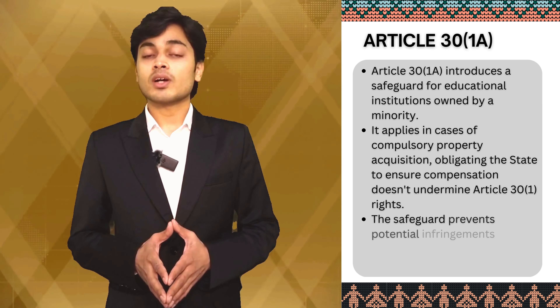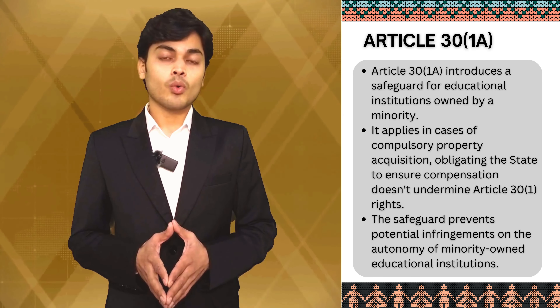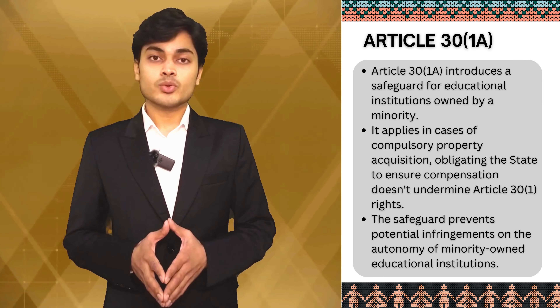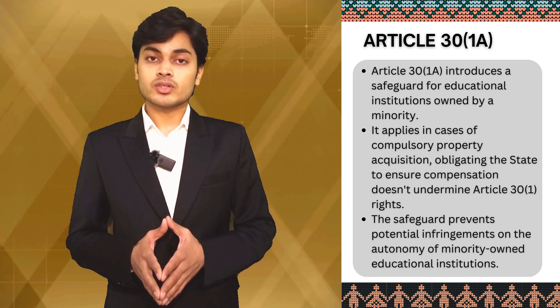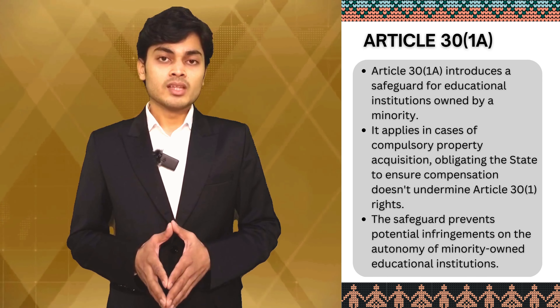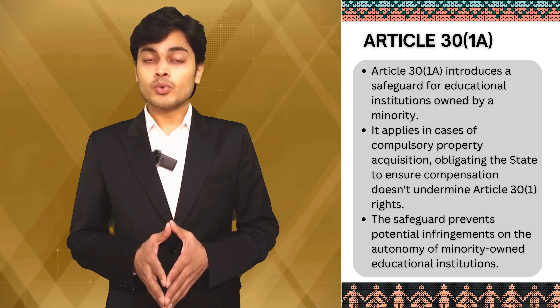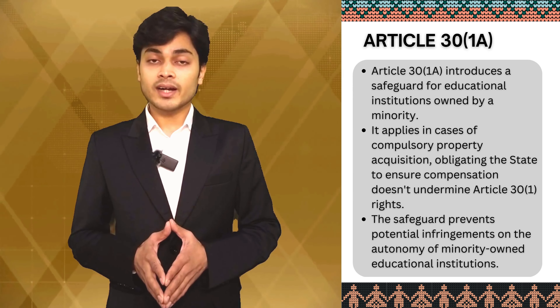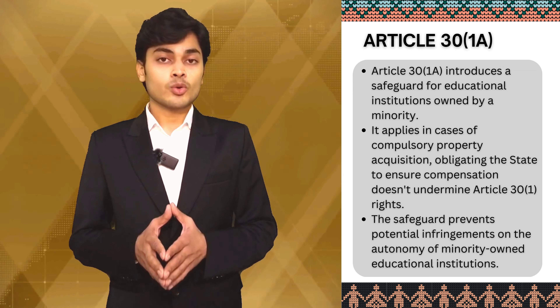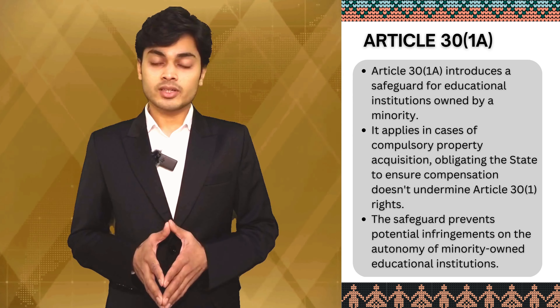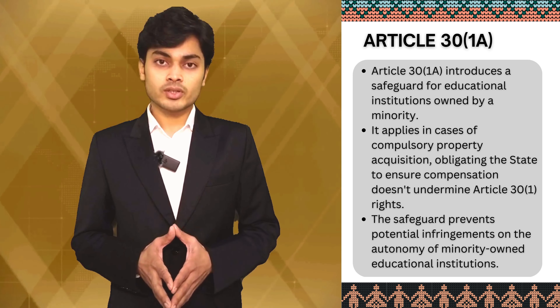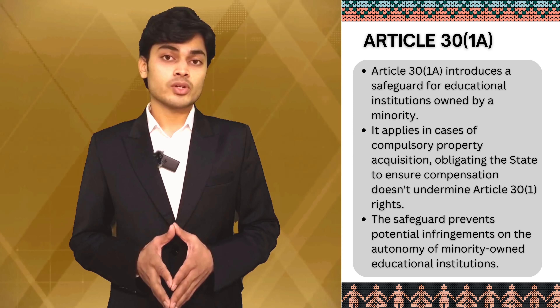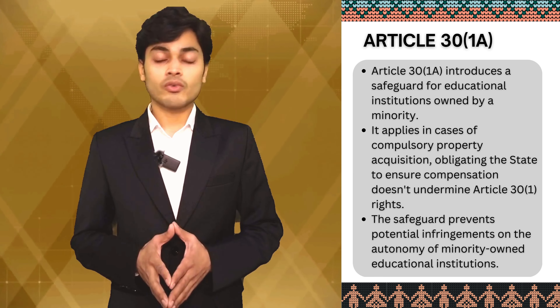Clause 1A of Article 30 introduces a safeguard. In the event of compulsory acquisition of property owned by an educational institution established and administered by a minority, the state is obligated to ensure that the compensation amount does not undermine the rights guaranteed under Clause 1 of Article 30. This is a crucial protection against any potential infringement on the autonomy of these institutions.